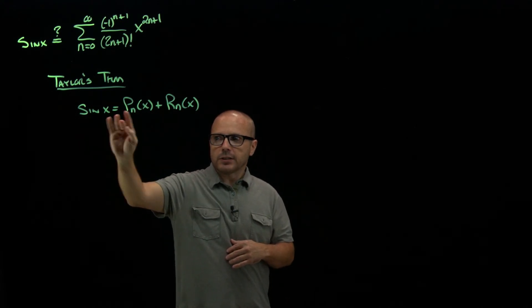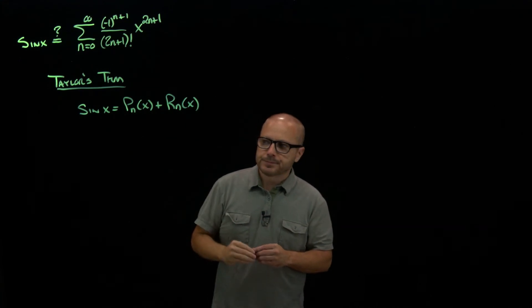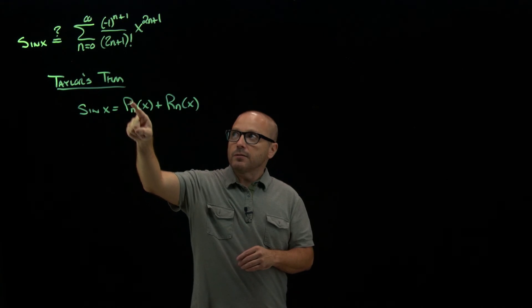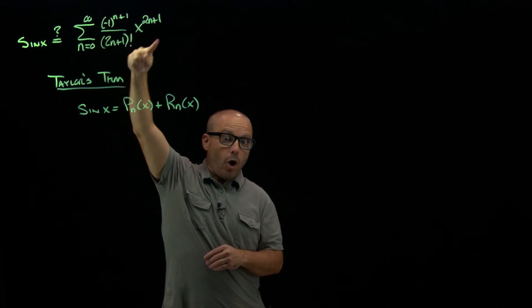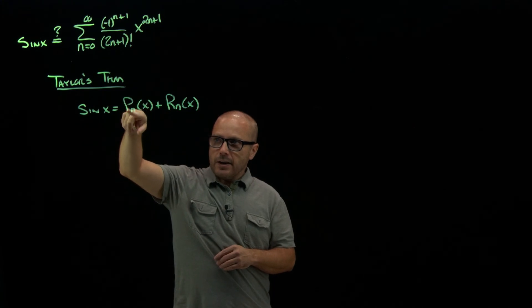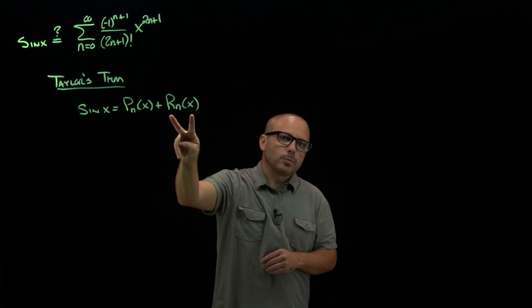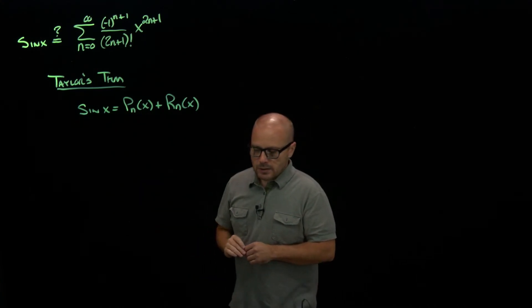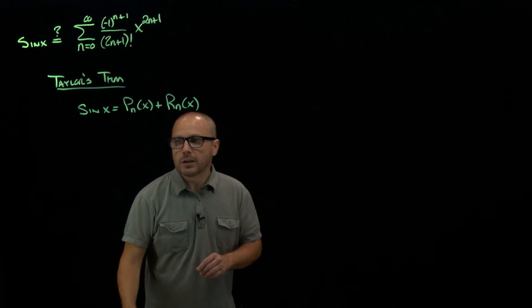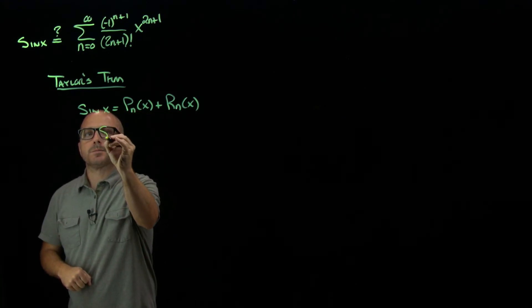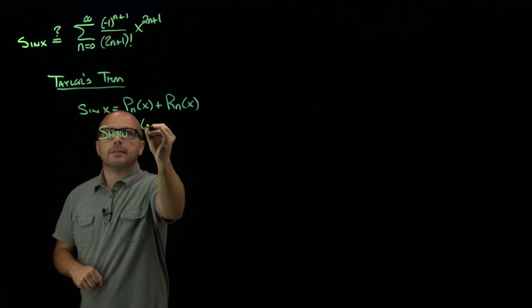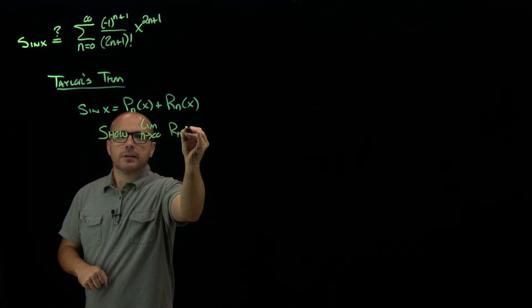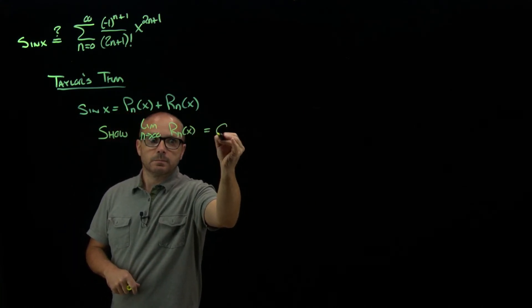Remember, Taylor's theorem says your function is equal to your Taylor polynomial plus some error. What we really want to show is that as n goes to infinity, as you start using all of the terms, as n gets higher and higher, if this term goes to zero, that means that at infinity, sine x is the Taylor series. So what we're going to attempt to show here is that the limit as n goes to infinity of our remainder equals zero.